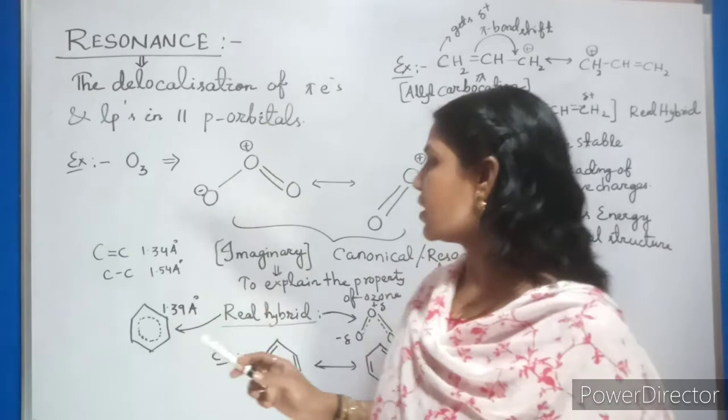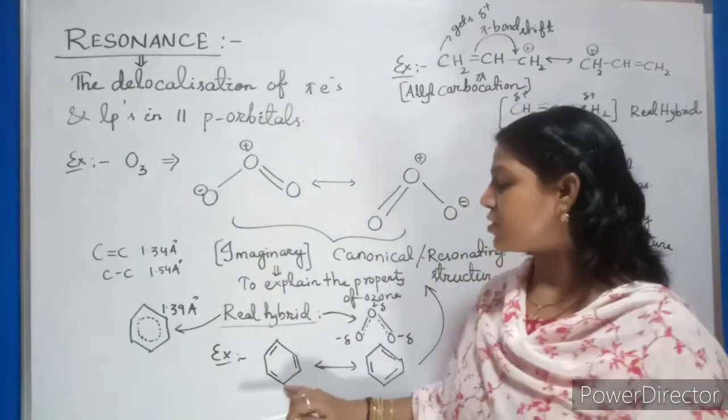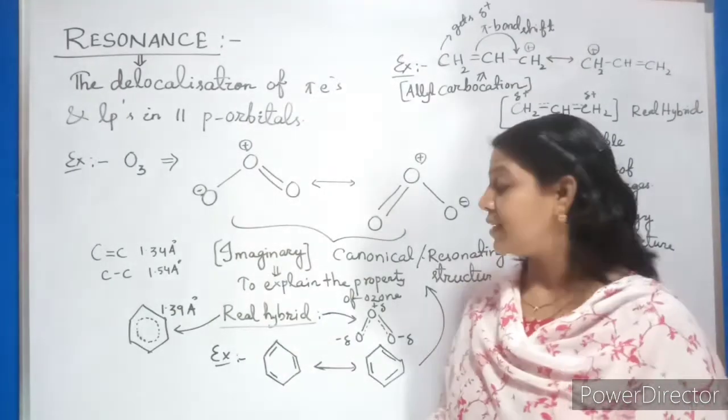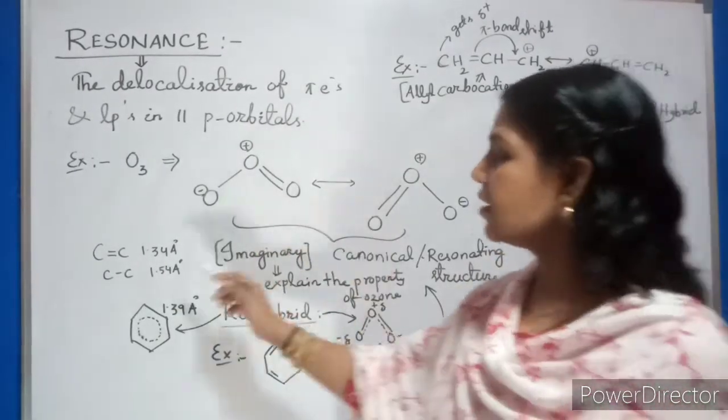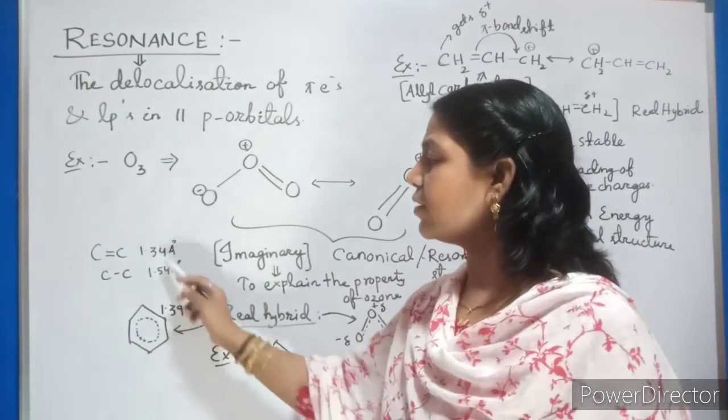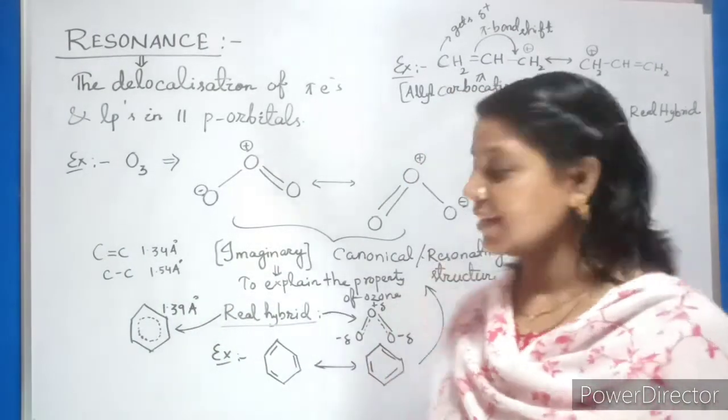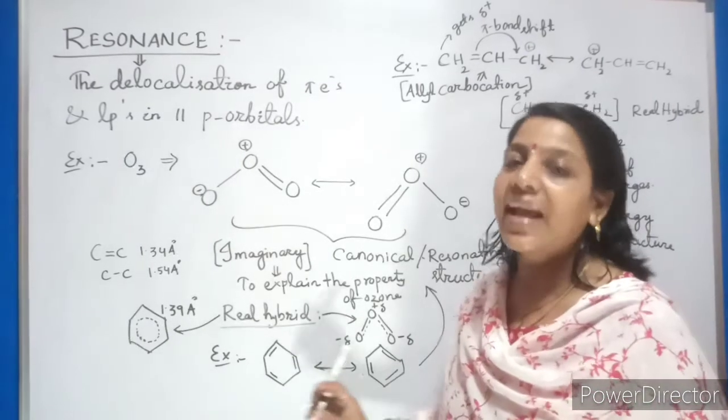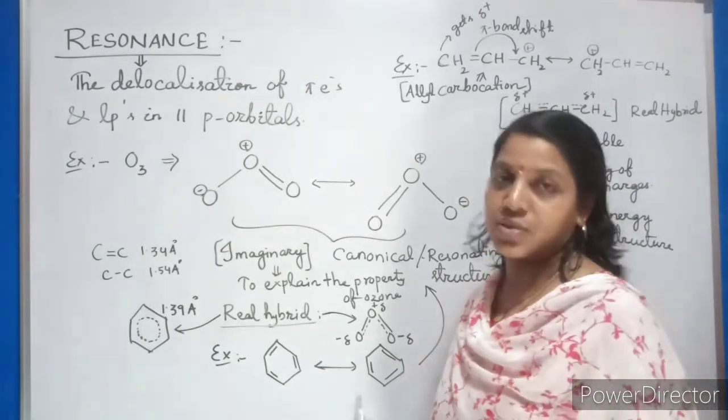Now for example, you are considering a benzene structure. Benzene structure has 3 single bond and 3 will be double bond. So definitely according to this, you should find your bond length. But this is the two different way you are presenting. This two is nothing but called as canonical structure or resonance structure.